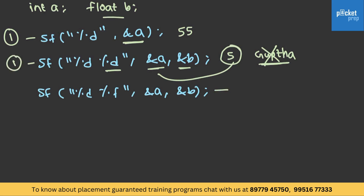In this case, it is expecting an integer and a floating point. So if 5 and 5.0 are given by the user, it will successfully read these two values and then 2 will be printed. This is how printf and scanf can be interpreted.